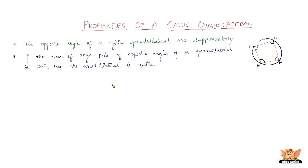So here we have the second property. The second property is kind of a reverse of the first property. It says that if the sum of any pair of opposite angles of a quadrilateral is 180 degrees, then that quadrilateral is cyclic. There are just two pairs of opposite angles. If the sum of any pair of opposite angles of a quadrilateral is 180 degrees, then that given quadrilateral is cyclic. So it is just a reverse way of stating the first property.